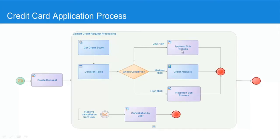If low risk, we start a sub-process from within this main process to automatically approve the card. If the result is high risk, then we start an automatic process to reject the card application. However, if medium risk, we move into a credit analysis phase where people from the bank get involved to analyse the credit request and decide whether or not the customer should receive their credit card. At any point during this process the user can cancel by using the cancellation sub-process.